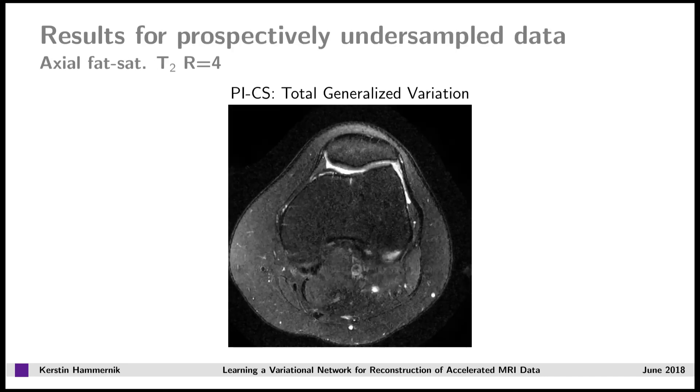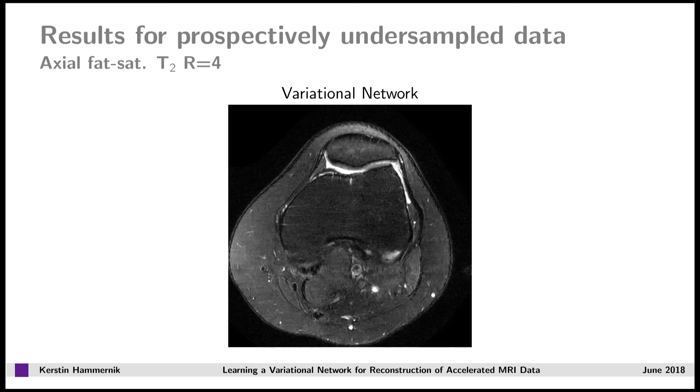We did not only perform retrospective experiments, but we also acquired prospectively undersampled data for one patient. Here, I show you the results for an axial T2-weighted scan with fat saturation. If we compare the total generalized variation, dictionary learning, and variational network results, we observe similar behavior as for the retrospective experiments.